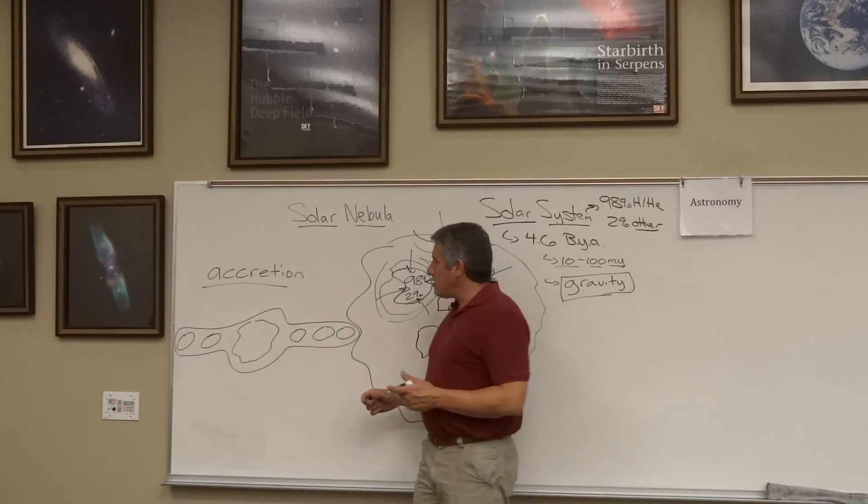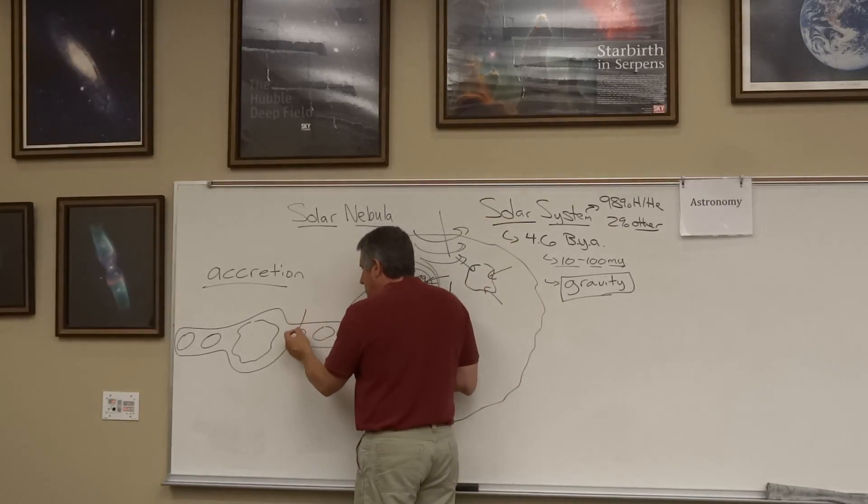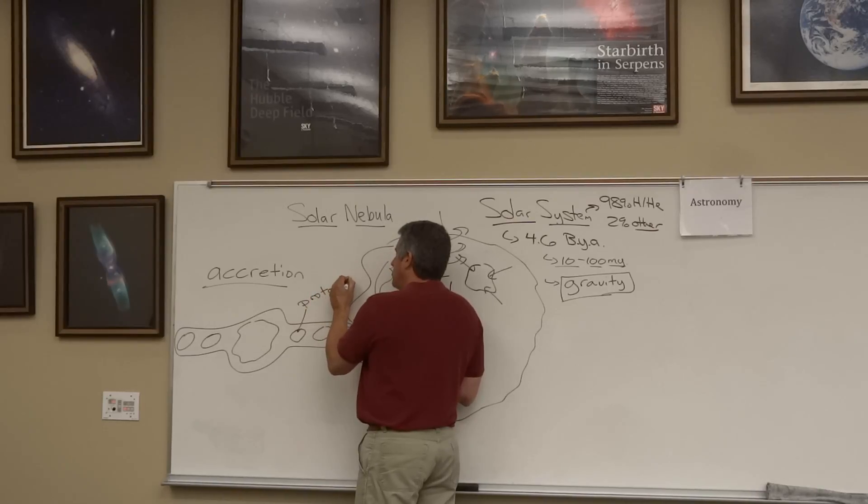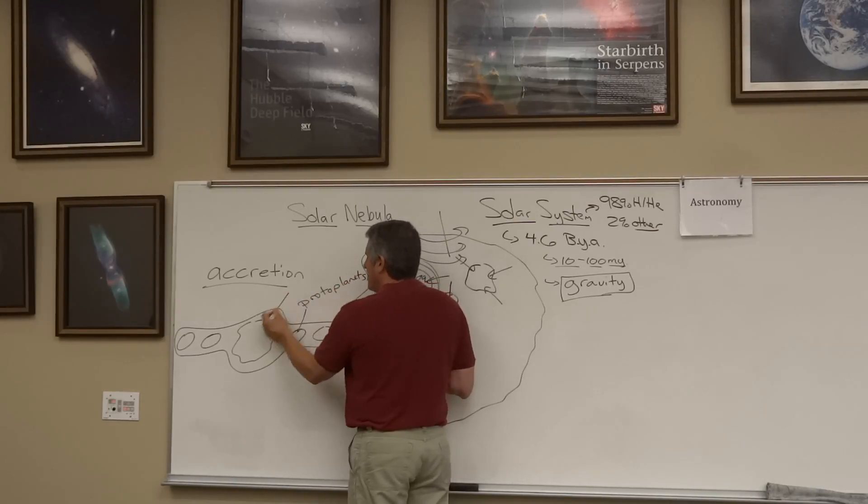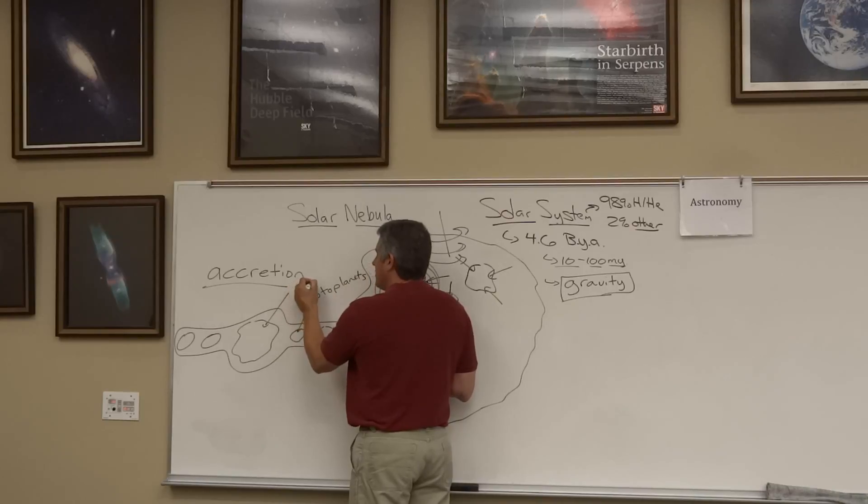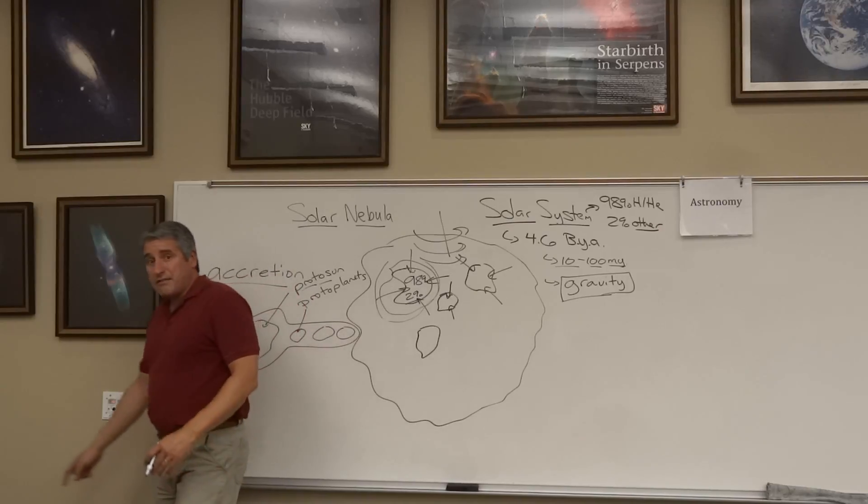In fact, I'm going to start calling these things not clumps anymore, but proto-planets, with the big object at the center being a proto-star, the proto-sun. How many of these do we have to have? Your guess is as good as mine.